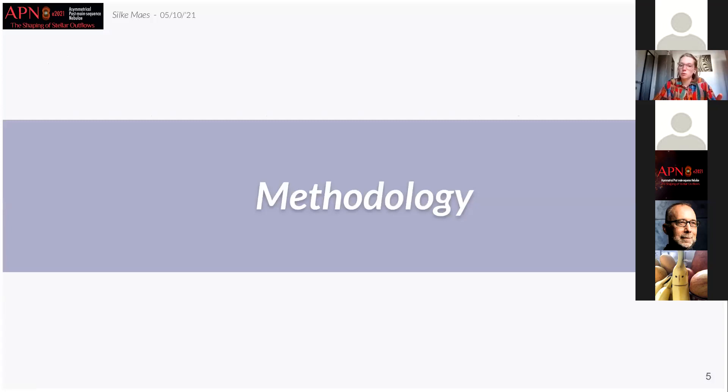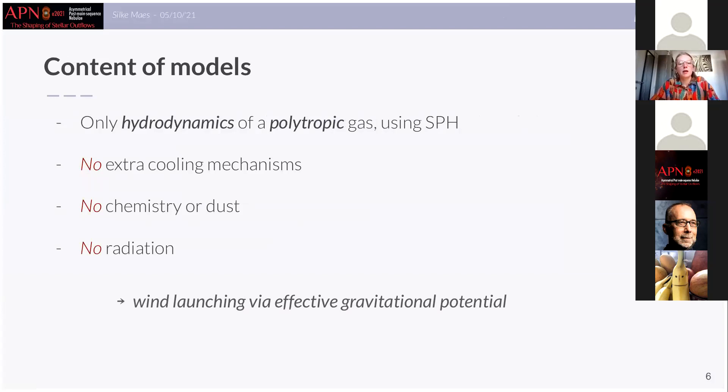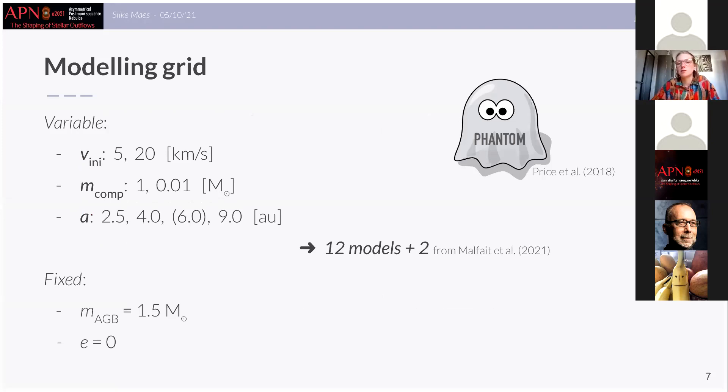Now what do our models look like and what are we using? So in our simulations we model the hydrodynamics of a polytropic gas with the technique of smoothed particle hydrodynamics but without the inclusion of extra cooling mechanisms, chemistry, dust or radiation. Although the latter two are needed for the launching of the wind from the surface of the HB star, this is replaced by including an effective gravitational potential in the momentum equation. The code that we have used is called FANTOM, an SPH code developed by Daniel Price and his collaborators.